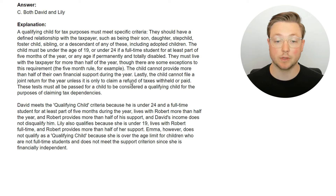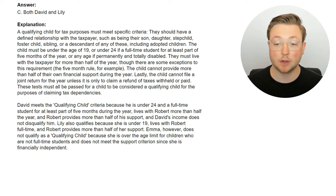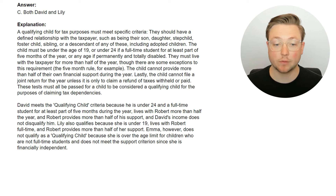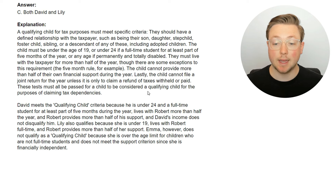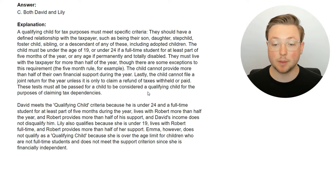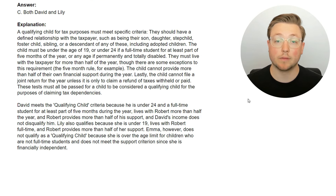The child cannot file a joint return for the year unless it is only to claim a refund of taxes withheld or paid. These tests must all be passed for a child to be considered a qualifying child. David meets the qualifying child criteria because he's under 24 and a full-time student for at least part of five months during the year, he lives with Robert more than half of the year, Robert provides more than half of his support, and David's income does not disqualify him. Lily also qualifies because she is under 19, lives with Robert full-time, and Robert provides more than half of her support. Emma does not qualify because she is over the age limit for children who are not full-time students and does not meet the support criterion since she is financially independent. So only David and Lily can be counted as qualifying child dependents.